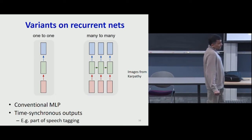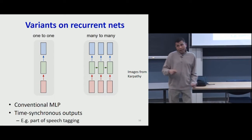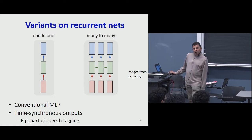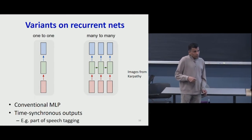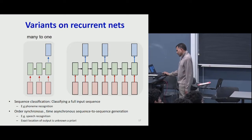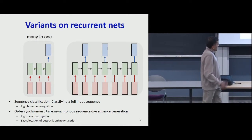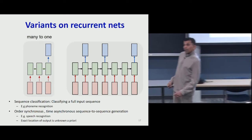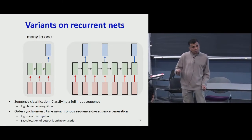As soon as an input comes in, the network processes it along with any information carried over from the past and uses the combined information to produce the output immediately — so it's time-synchronous. But then you can have something where the network analyzes an entire sequence of inputs and then produces a single output. This would happen if you were performing speech recognition — you would see a sequence of inputs and say, 'this was the phoneme ah.' Or if you were performing question answering, you'd look at the sequence of words as a query, and only when the query was fully understood would you produce the answer.